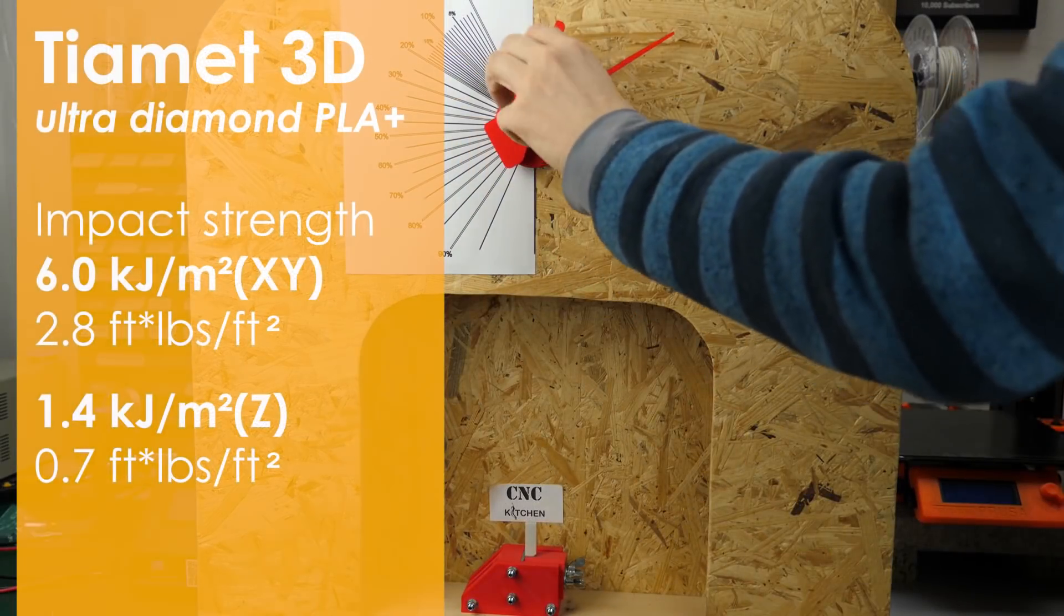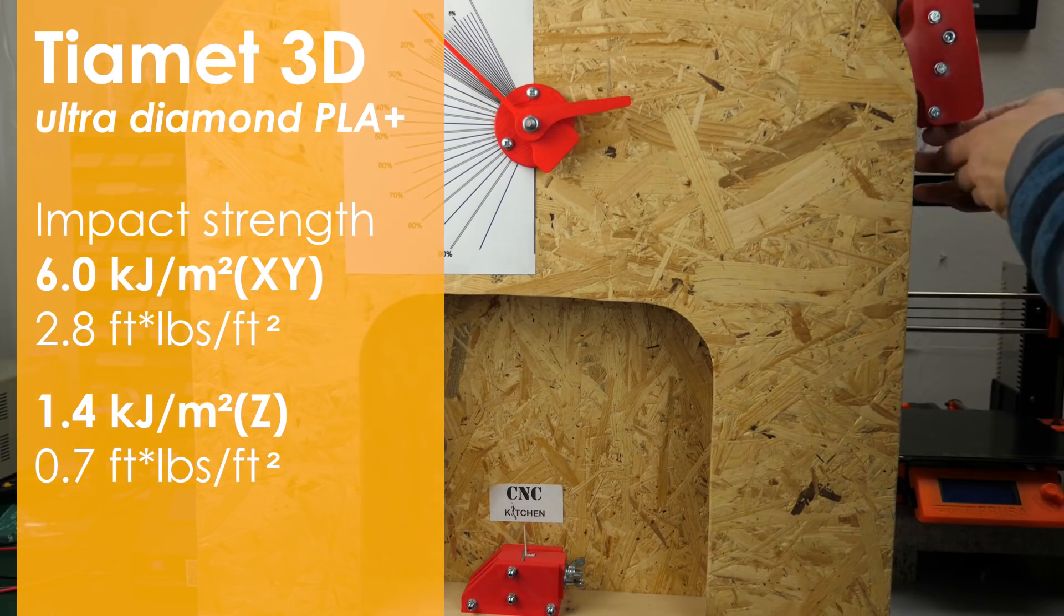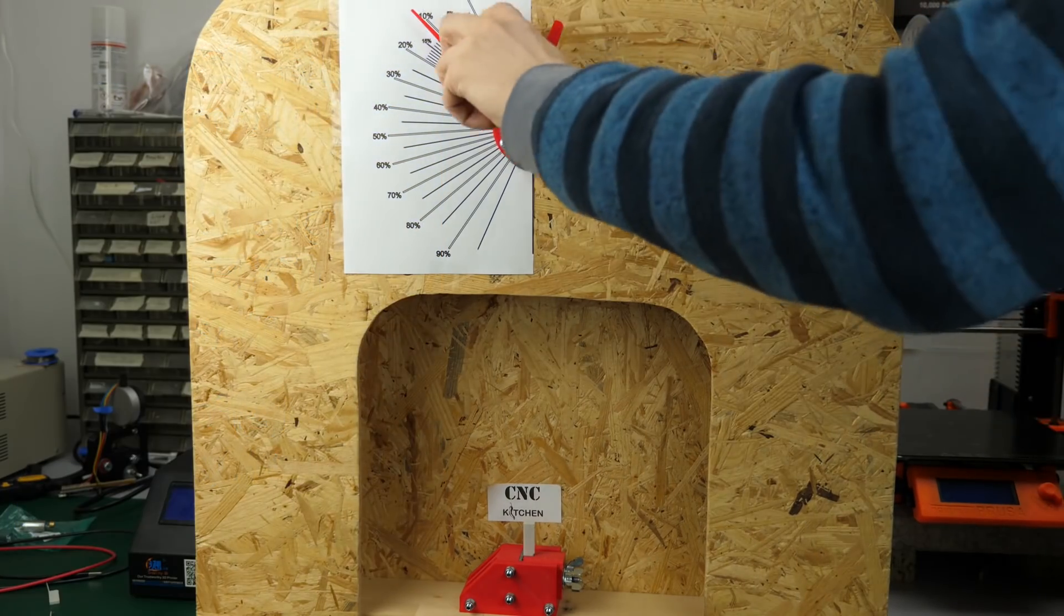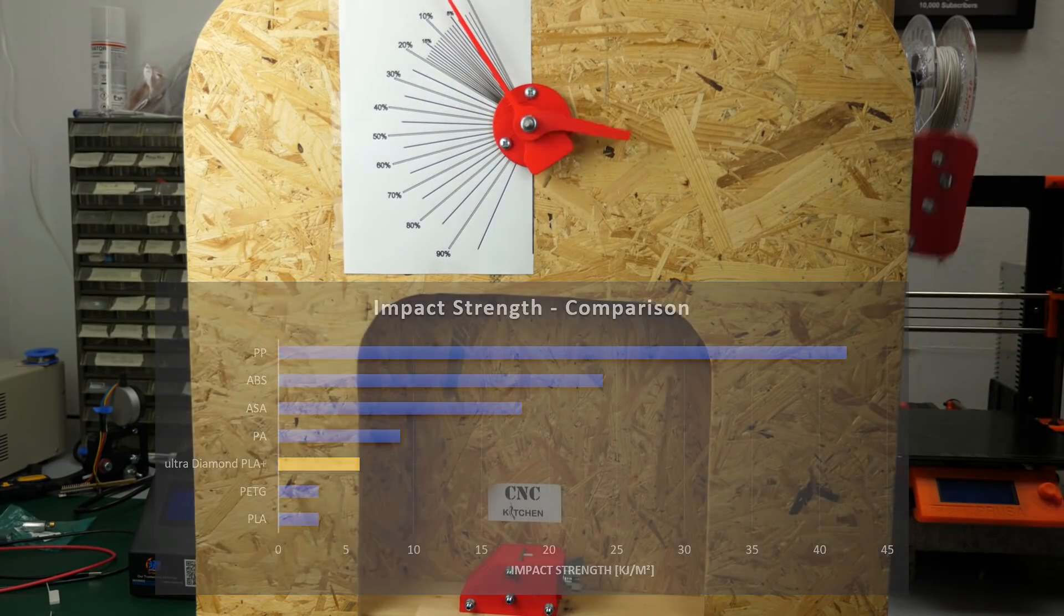The nanodiamond PLA filament has an impact strength around twice the one of regular PLA but still far away from ABS for example. The impact strength of the standing coupons was similar to the tensile tests, again only around one quarter.